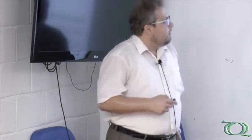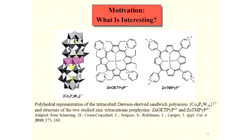Here are examples of these compounds with a covalent bond between substituted porphyrin and polyoxometalate. Another one is the complex made by electrostatic interaction between this kind of polyoxometalate and these kinds of substituted metalloporphyrins.